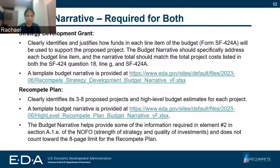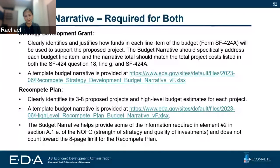The last form required for both applications is your budget narrative. For your strategy development grant, clearly identify and justify how each line item requested in the budget will be used to support the proposed project. We've included a template for you. For recompete plan applicants, there's a separate Excel template called a high-level Recompete Plan budget narrative. For the recompete plan, it will ask you to identify three to eight proposed projects that you would submit if you were moved on to Phase 2, along with high-level budget estimates for each of these projects.